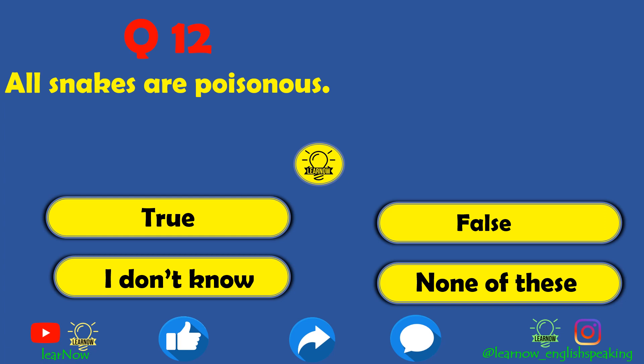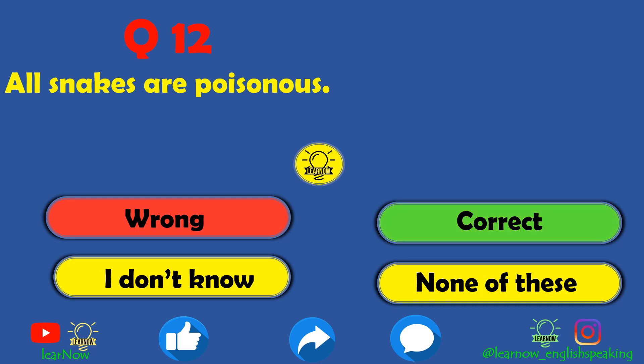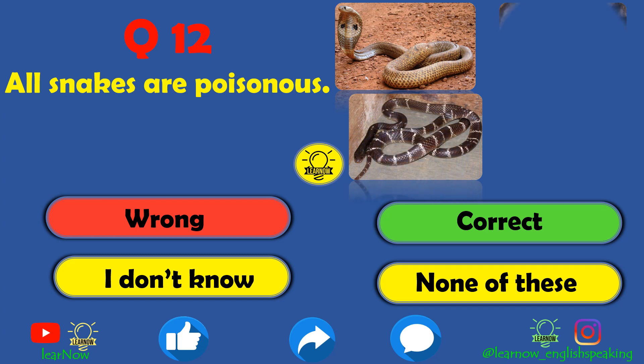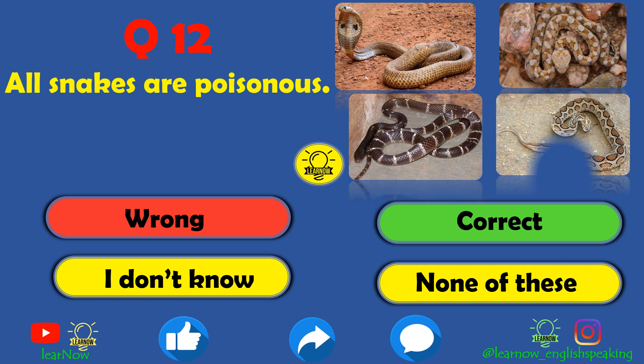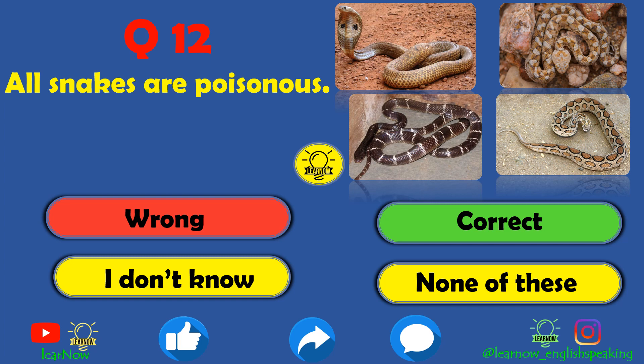Next question: are all snakes poisonous — true or false? This statement is false. Not all snakes found in India are poisonous. In the chapter 'The Snake Charmer's Story' we learned that in India there are four types of poisonous snakes: cobra, common krait, saw-scaled viper, and Russell's viper.